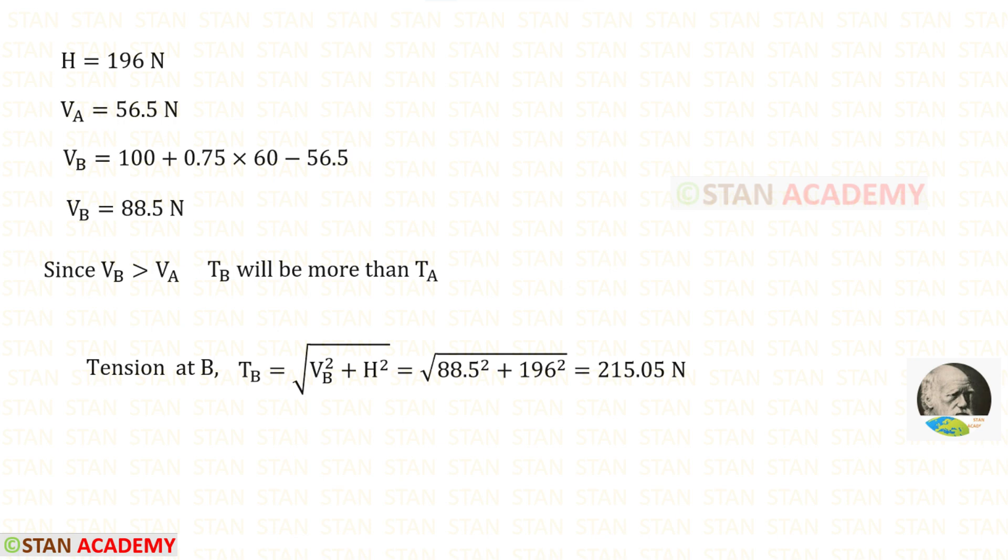Now let us find the tension at point B. The formula is the square root of VB squared plus H squared. Let us apply both of them. Finally we get 215.05 N.